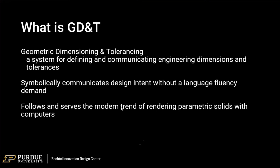Geometric dimensioning and tolerancing is a system for communicating what you need a product to do to a manufacturer in a way that doesn't require English or any other notes or special design. It's a symbolic language — an international symbolic language organized with an international standard. It should be able to communicate any arbitrary geometrical shape that has to be assembled with another one, and communicate the assembly requirements completely within itself.